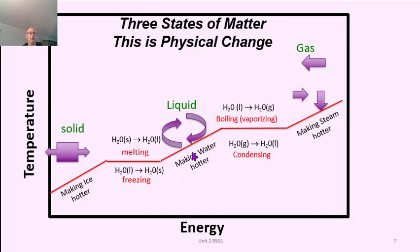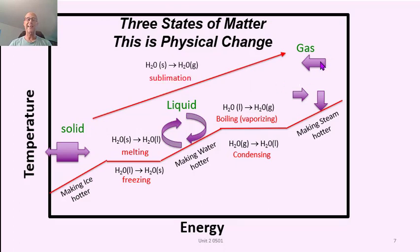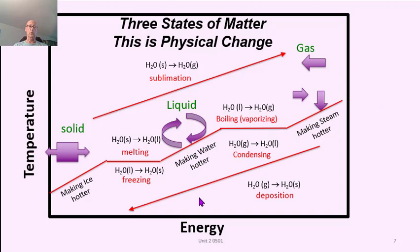Now, the harder one that some people don't know is if you took solid, like dry ice, and went directly to the gaseous state, that's called sublimation. And if you took a gas, like clouds, and turned them directly into the solid state, like snow, that's called deposition. These are six terms I want you to be familiar with.